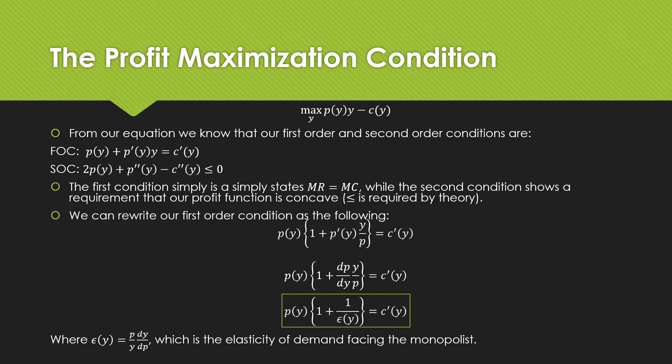We can rewrite our first order condition as the following. Pulling out price, we now have P(Y), price as a function of output, times one plus P prime as a function of Y times Y all over P, which is equal to the marginal cost.